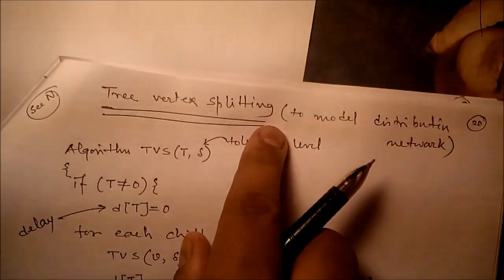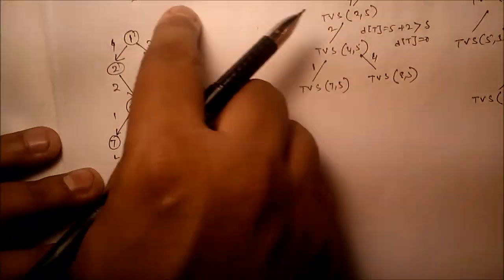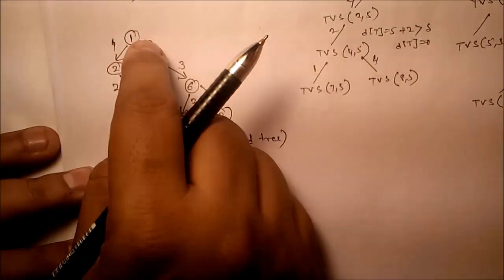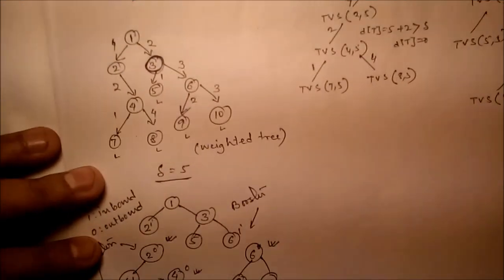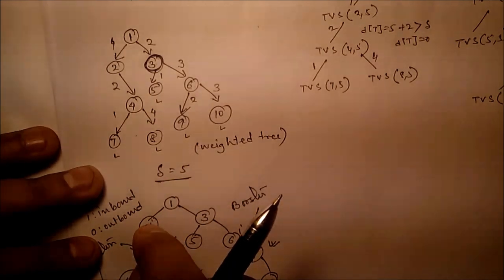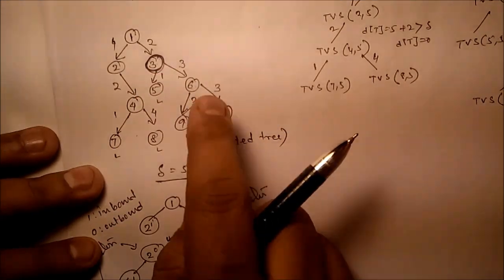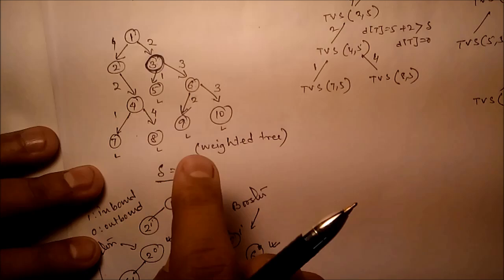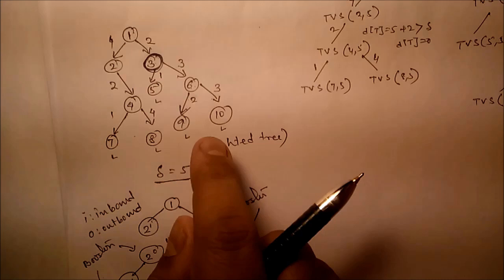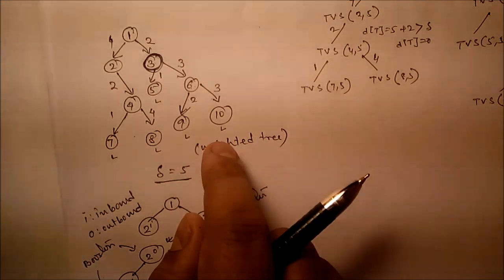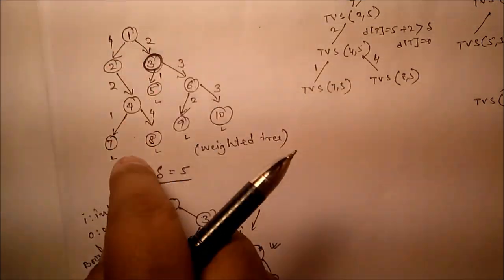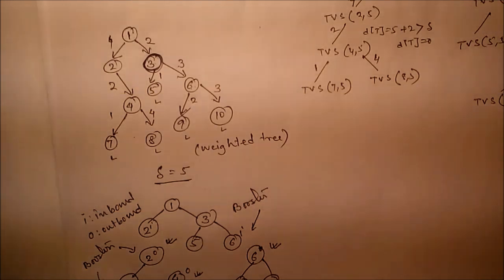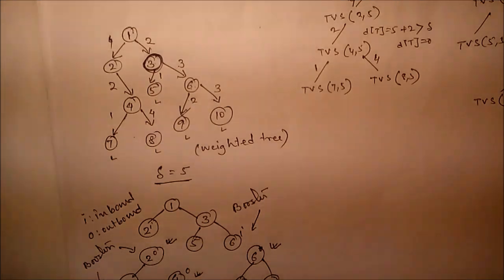Given a network and the loss tolerance level, tree vertex splitting determines the optimal placement of boosters. In a transmission system — whether transmitting oil or electrical signals — to maintain flow we must maintain voltage and pressure. Due to losses, voltage or pressure may drop, so we place boosters such as generators or repeaters. It is assumed that boosters can only be placed at nodes of the tree.